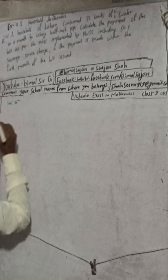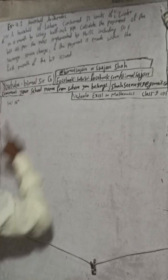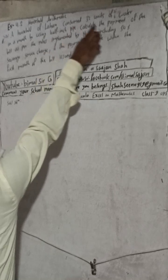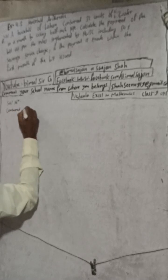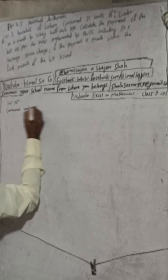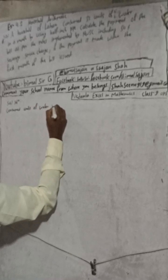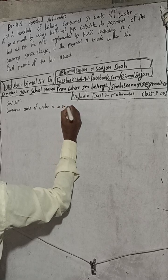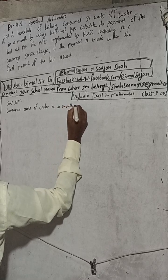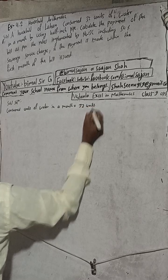So here, the consumed units of water in a month — that is 32 units.